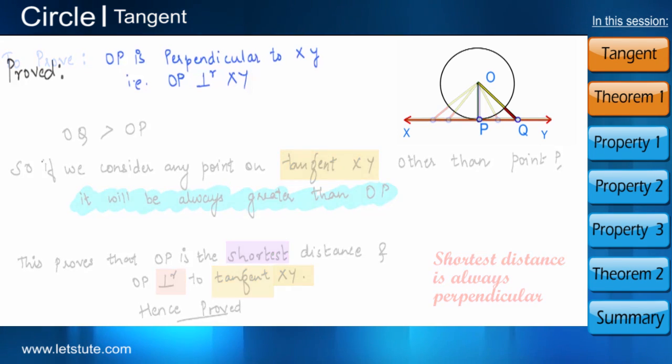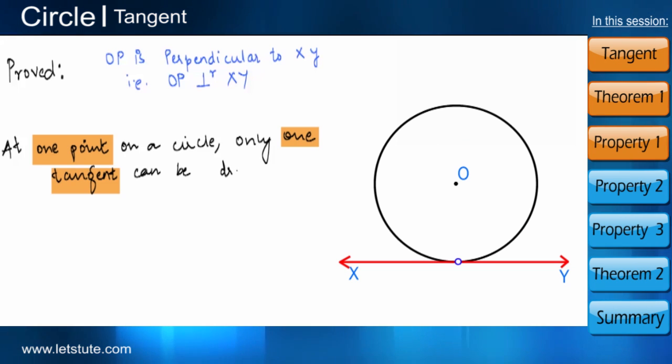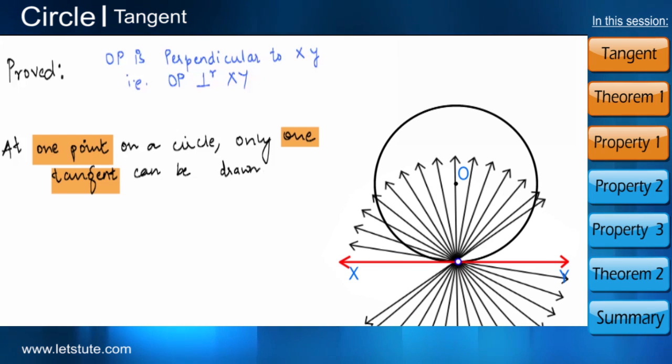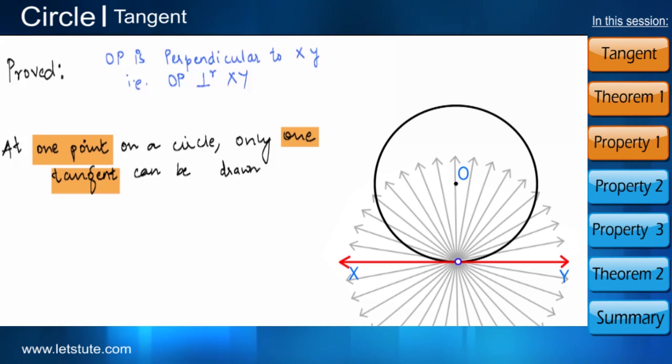From this theorem, we can also conclude that at one point on a circle, only one tangent can be drawn. If we see, there can be infinite lines that can be drawn passing through that point, but only line XY is the tangent.